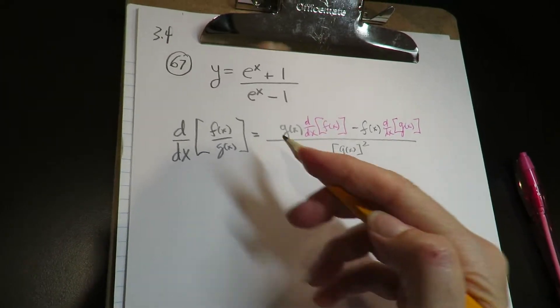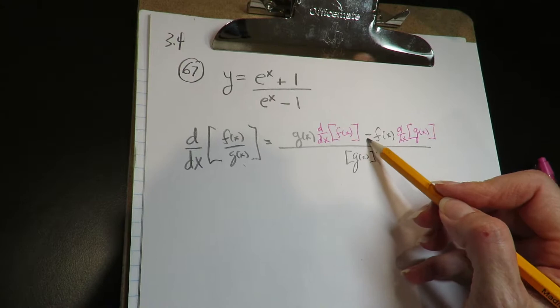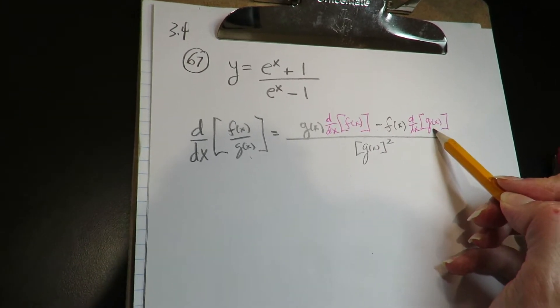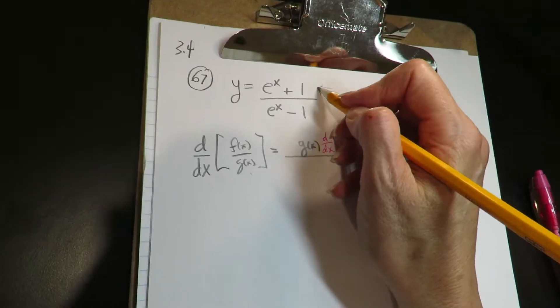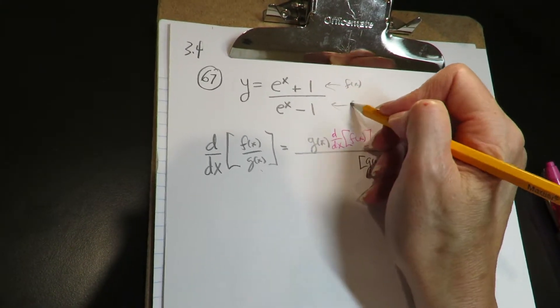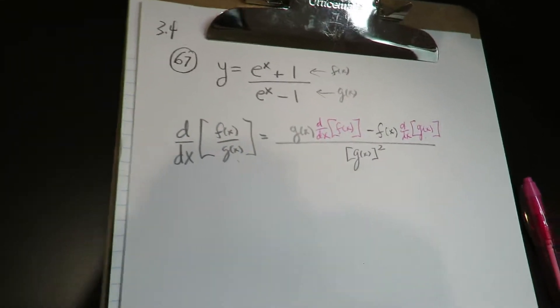Okay, so the quotient rule is the denominator times the derivative of the numerator minus the numerator times the derivative of the denominator over the denominator squared. This guy would be the f of x, the numerator function, and this guy would be g of x, the denominator function.